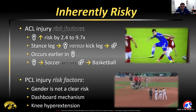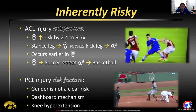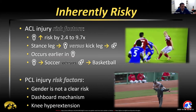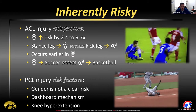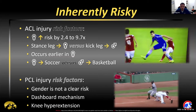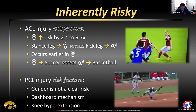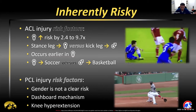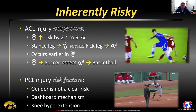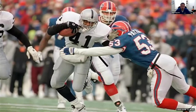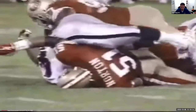PCL risk factors: gender doesn't seem to play as big a role here. Dashboard mechanism is common — if you think about an anterior force directing the tibia posteriorly, you can see how the PCL would be compromised. Hyperextension is also a common mechanism. That's Ronald Acuña Jr. running down the first baseline — he didn't actually tear his PCL, but it's a good representation of what hyperextension of the knee can look like. Our next athlete from Monday Night Football is Napoleon McCollum, who gets wrapped up and rolled over with his foot underneath him, and the knee doesn't bend that way.